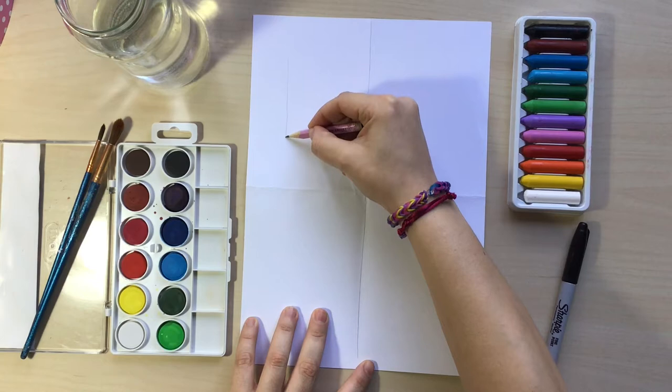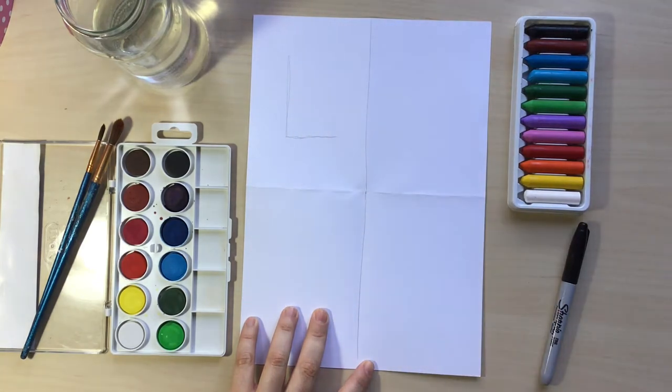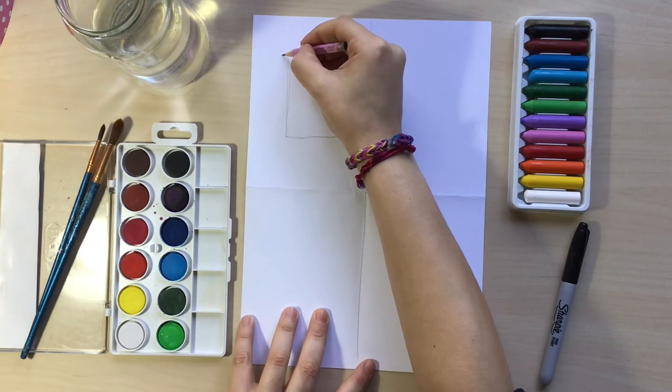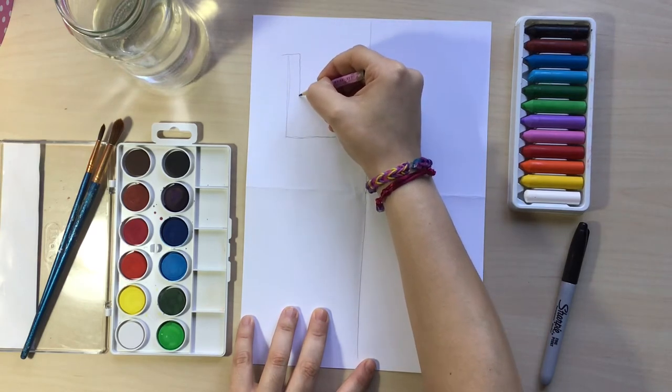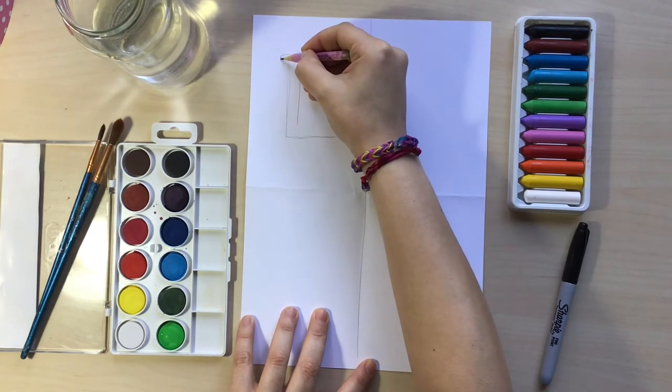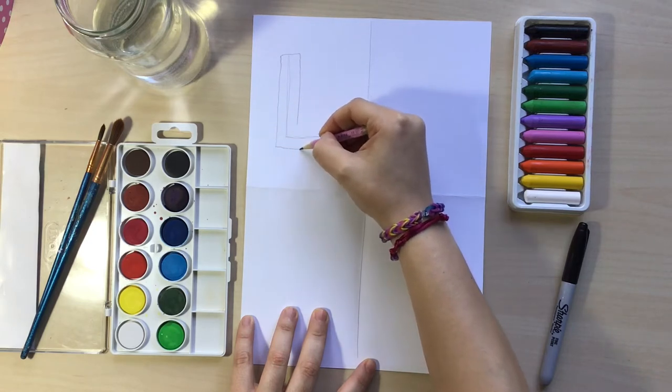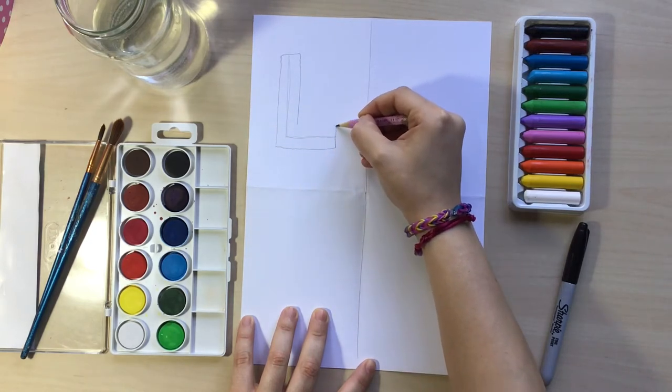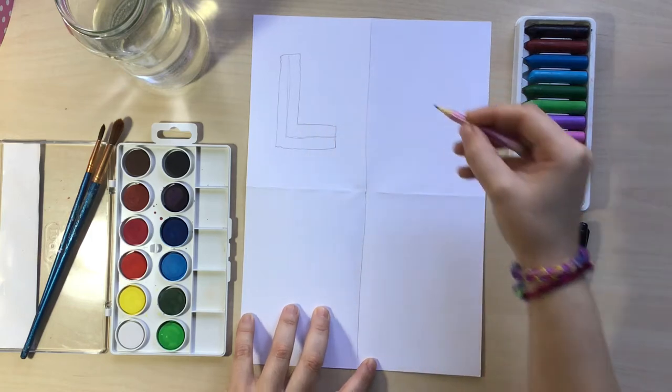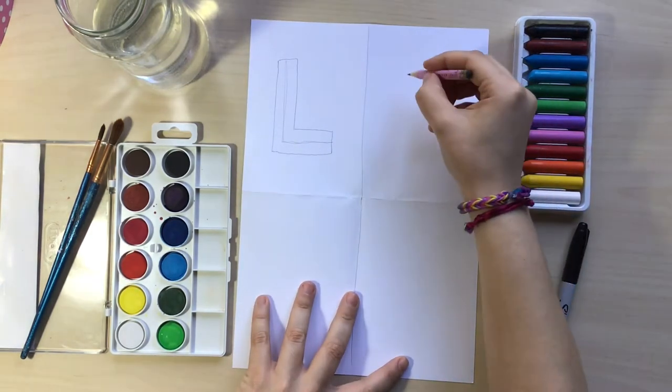And I'm going to start by making the L on the upper left corner. Here, I'm going to be very light, just in case I mess up, I can erase it. And from that L that I just made, I'm going to create a block letter. I'm going to do this by just going around the line I just made.